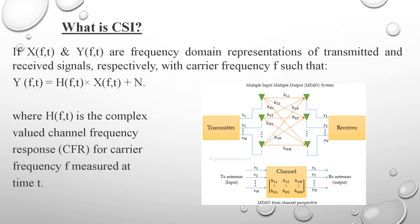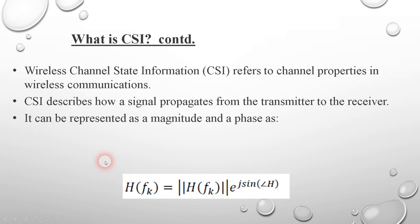Channel state information is the information about the media between the transmitter and receiver — the mixing system between them. It refers to the channel properties in wireless communication and describes the signal propagation from the transmitter to the receiver. It can be represented as a magnitude and phase. The transmitted signal gets mixed in the media between the transmitter's multiple antennas and the receiver's multiple antennas.